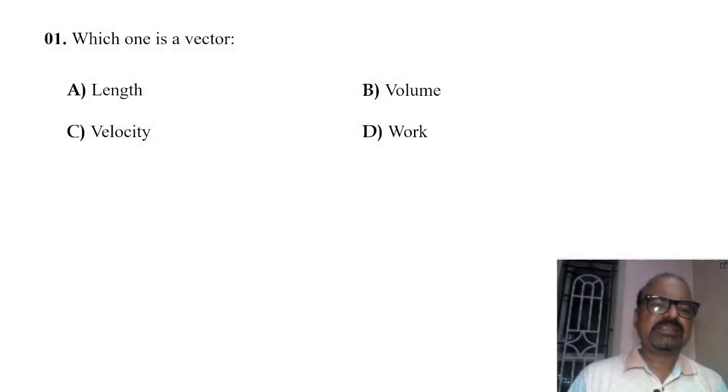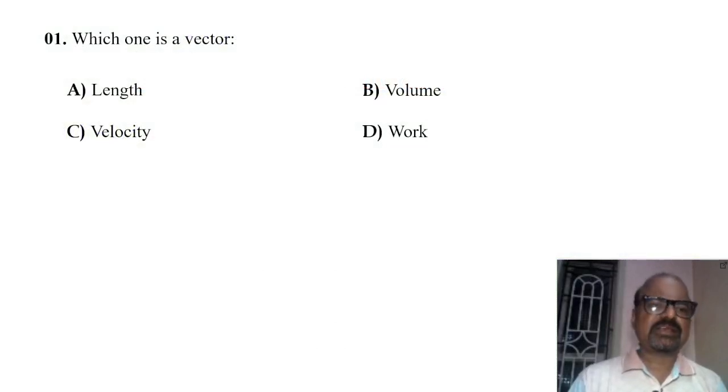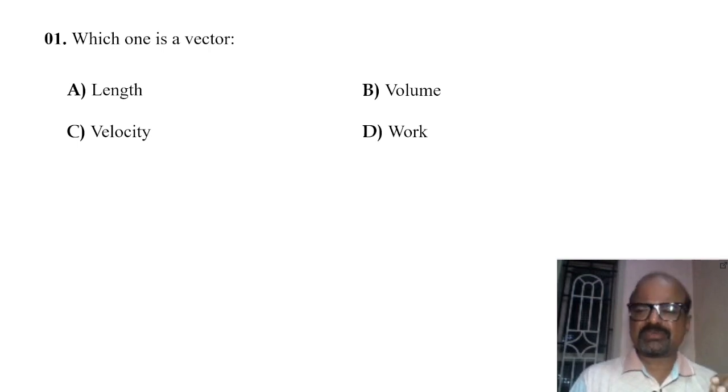Which one is a vector? The options are length, volume, velocity, and work. These are easy questions. The answer is velocity.